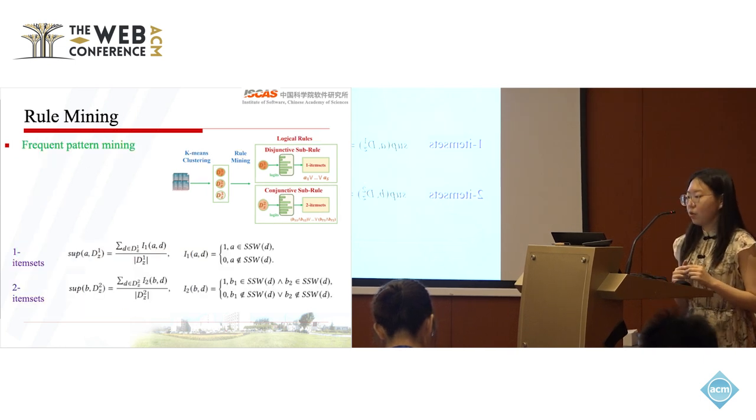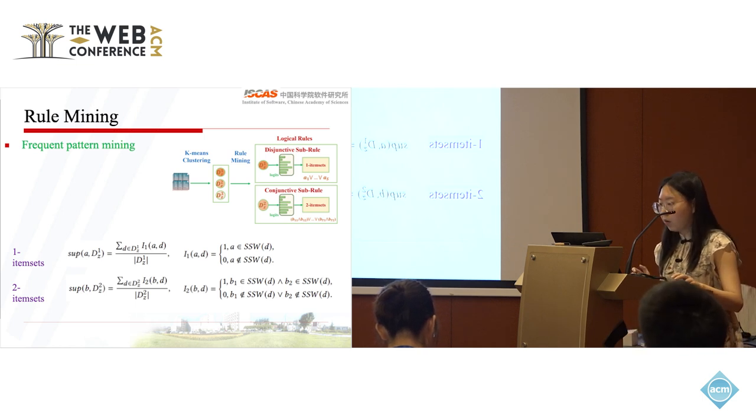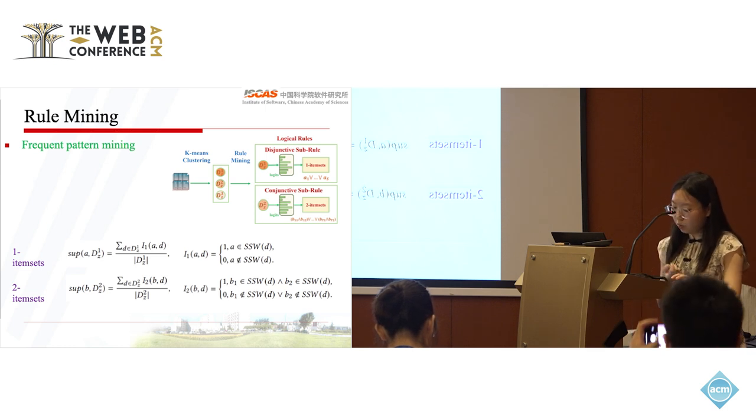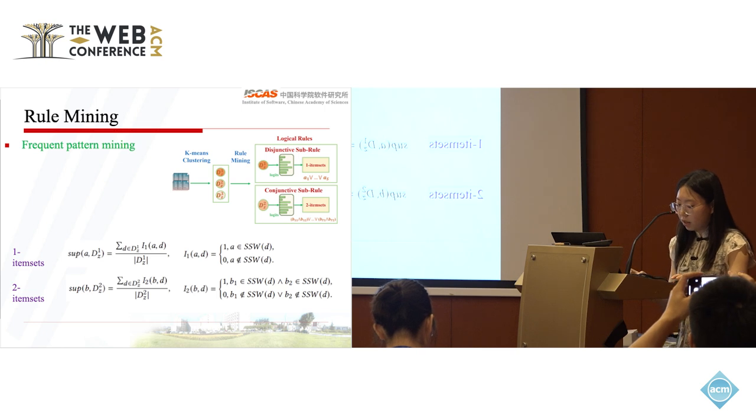Then, we use frequent pattern mining to obtain the logical rules in each category. Here, we treat each text as a transaction and each strong signal word as an item of the transaction. We pay attention to the most confident set to mine the frequent one-item sets, which compose the disjunctive sub-rule.